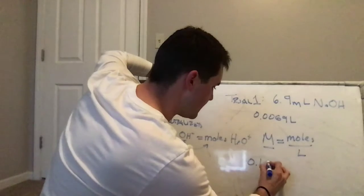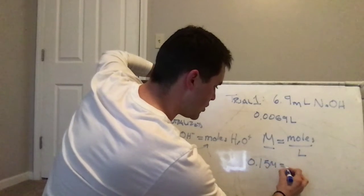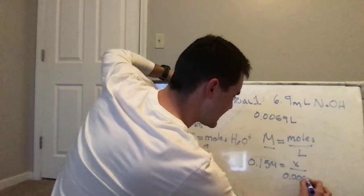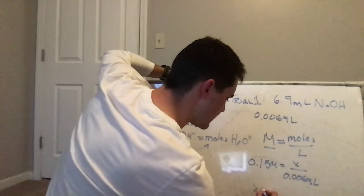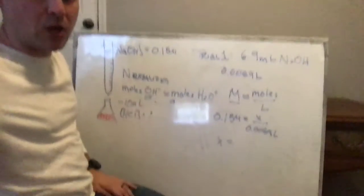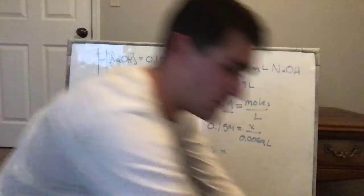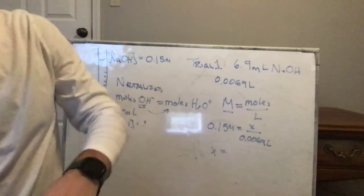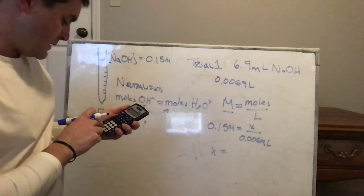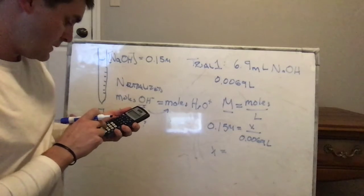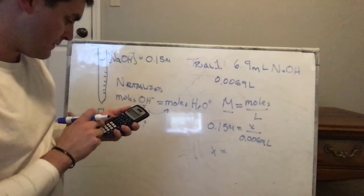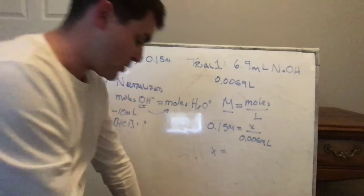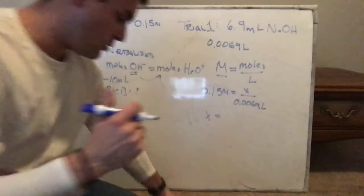If we remember that concentration or molarity is equal to the number of moles of a substance divided by the liters, we can set up an equation to solve this. Let's do that. 0.15 molar NaOH is equal to X number of moles divided by 0.0069 liters. How many moles is that? I'm going to give you a second to get your calculator out and punch that in, but I'm going to grab my calculator as well, and I'll punch it in too, just so we can be on the same page. 0.069 times 0.15. I get a small number. That's okay. I expect that, but it's pretty small. How many moles was it?